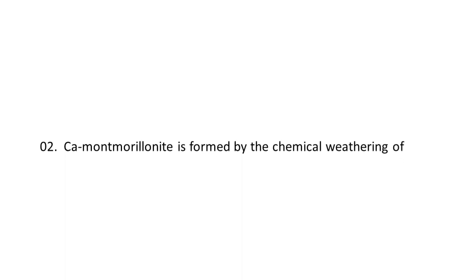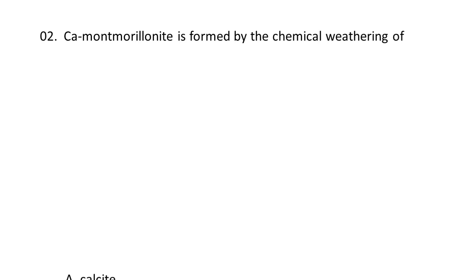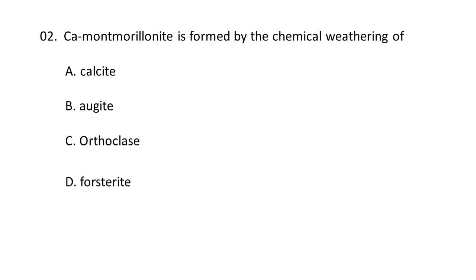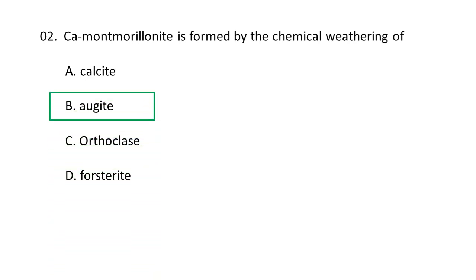Next question: Calcium Montmorillonite is formed by the chemical weathering of A. Calcite, B. Augite, C. Orthoclase, D. Forsterite. Calcium Montmorillonite is formed by the chemical weathering of augite, as augite is a common rock-forming mineral that readily breaks down into clay minerals like Montmorillonite, particularly when calcium ions are present during the weathering process, which leads to the formation of calcium Montmorillonite. So B is the correct option.